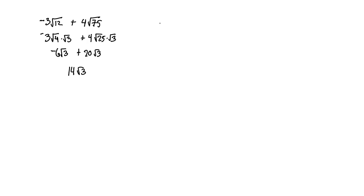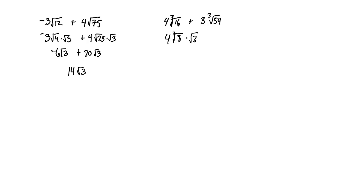Let's try another one: 4 times the cube root of 16 plus 3 times the cube root of 54. Now instead of looking for perfect square factors in the radicand, we're going to look for perfect cubes. For the cube root of 16, we have the cube root of 8 times the cube root of 2.